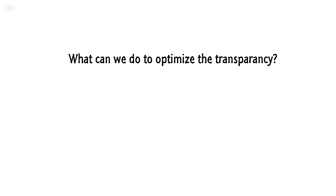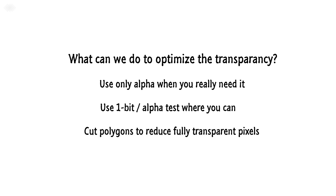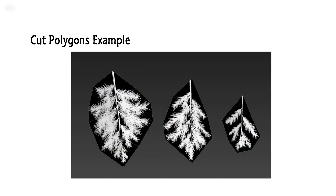How to optimize transparency: use only alpha when you really need it, use 1-bit or alpha test where you can, and cut polygons to reduce fully transparent pixels. For example, a tree with only square planes as the geometry for branches has a lot of black pixels in the alpha mask. If you take a pass on the geometry and cut away the planes to match the image better, you will remove a great deal of fully transparent pixels. In a forest with these trees, this simple operation alone can save many, many FPS in your game.